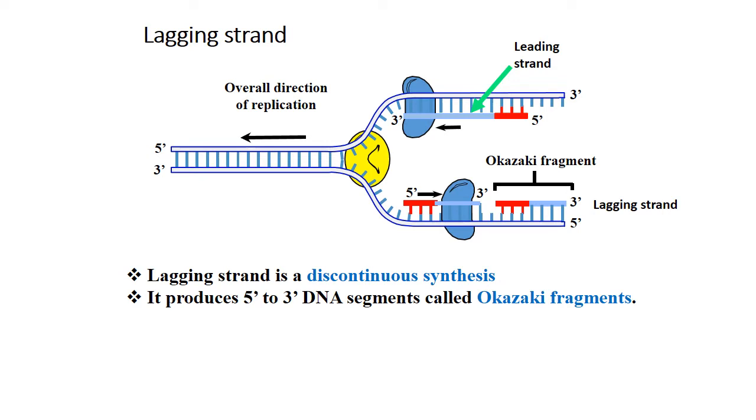The lagging strand is synthesized in the template that runs from 3' to 5'. Because the synthesis of the DNA has to be in the 5' to 3' direction, it means several primers will have to be inserted so that several Okazaki fragments can be synthesized in the 5' to 3' direction, as you can see in the lower part, because the overall direction of replication is on the right side. The Okazaki fragments have to be synthesized so that in the long run, the DNA strand that is synthesized follows the overall direction of replication.